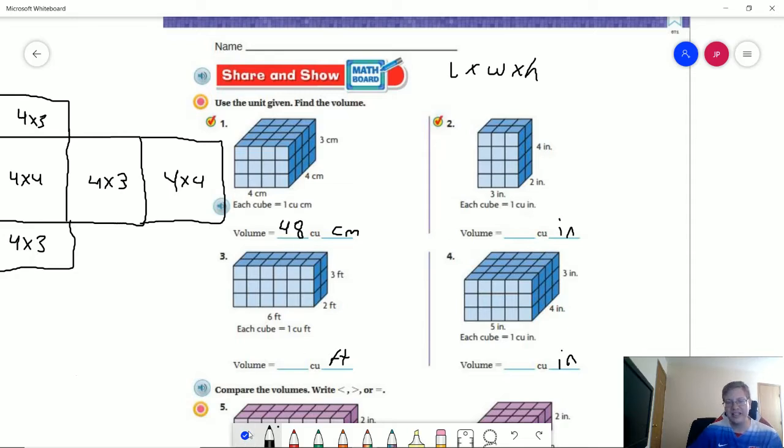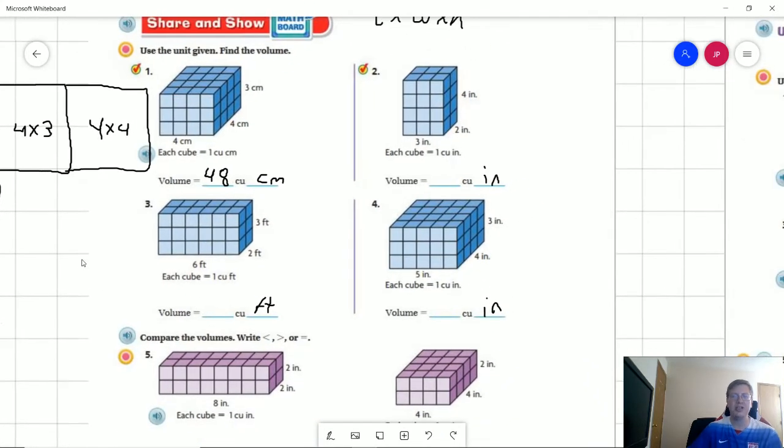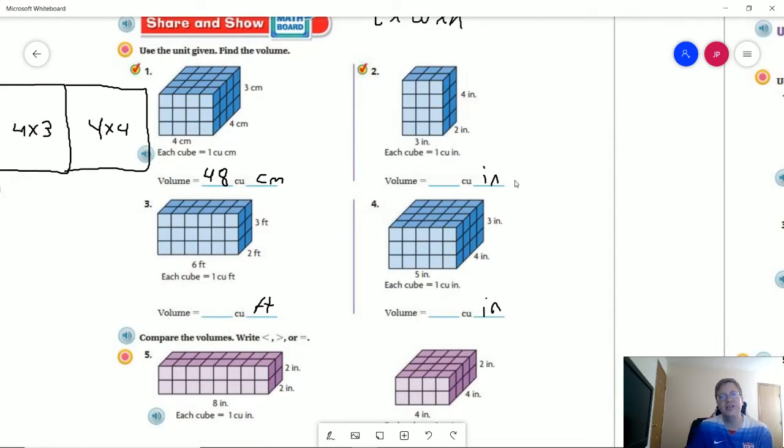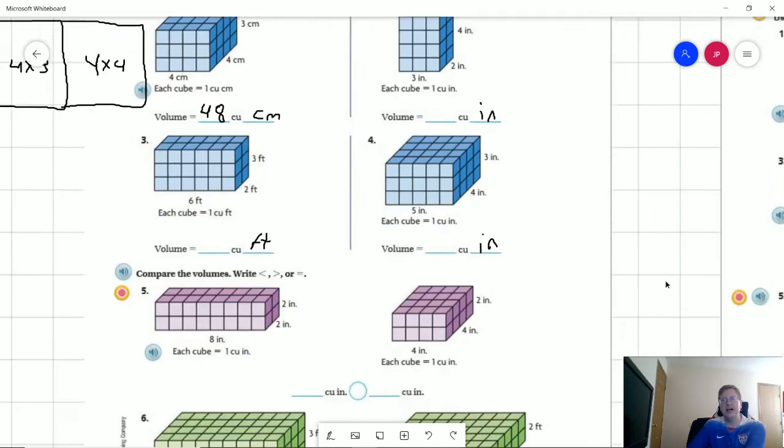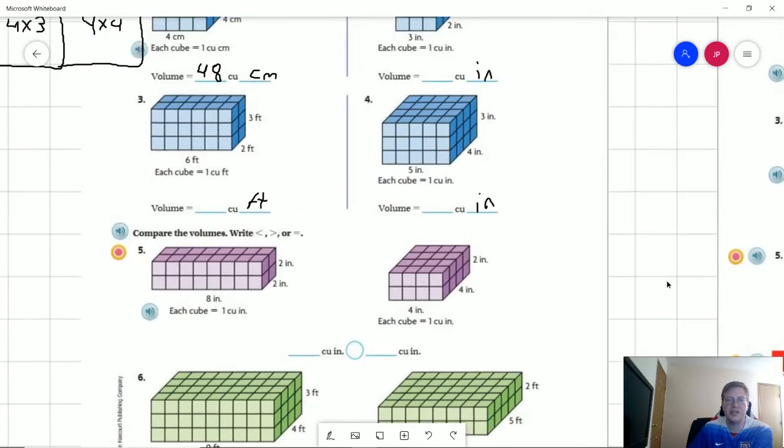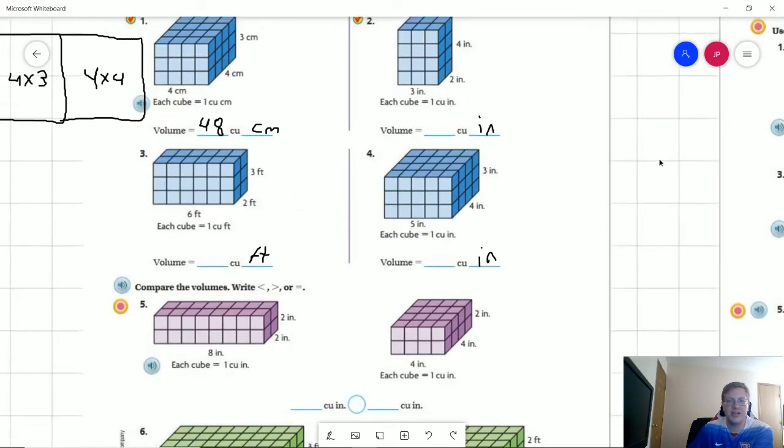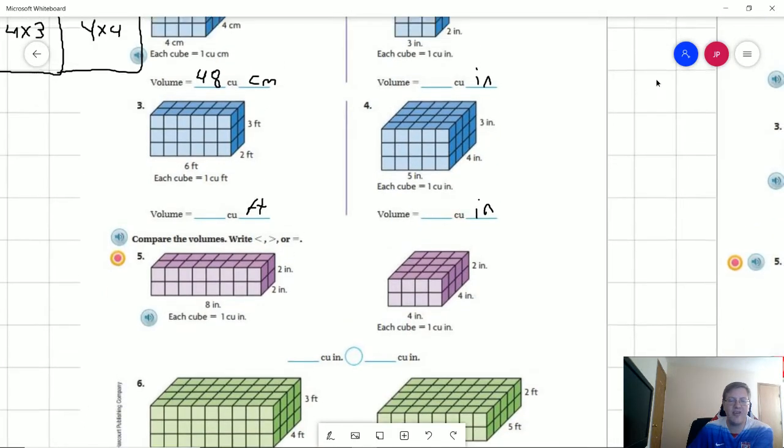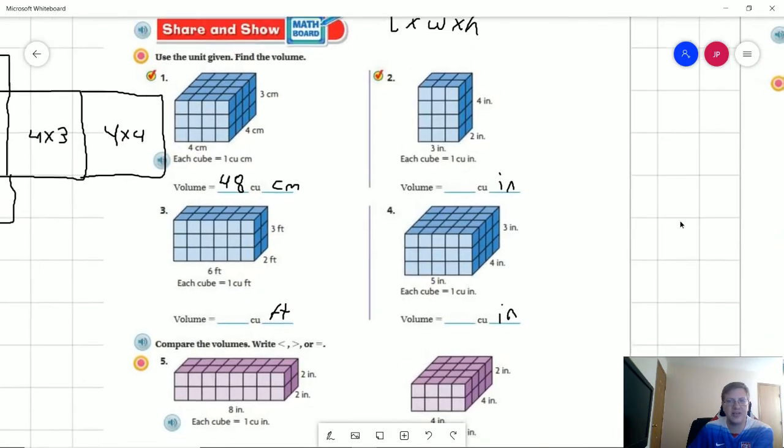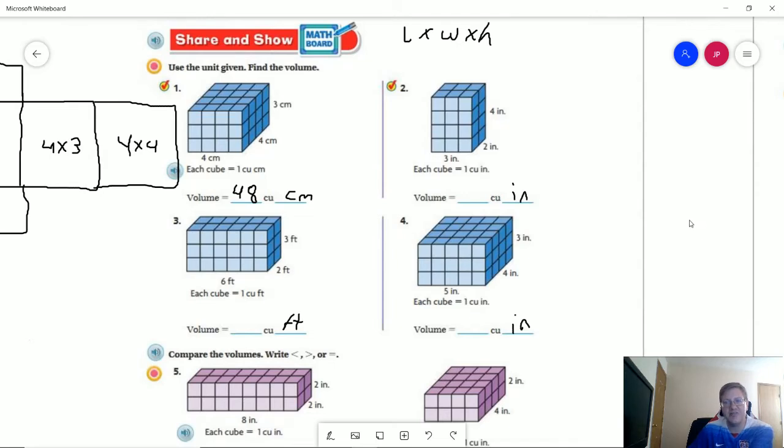This is kind of the idea of what we're working with. I'm going to move a little bit quicker. If you want to go ahead and pause the video so that you can work through number two through number six, again Risen Christians we're going to do one, three, and five that are assigned for you, but I am going to talk through all of them. So go ahead and pause the video if you need to.